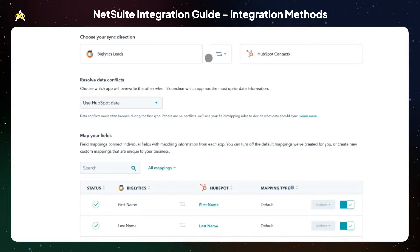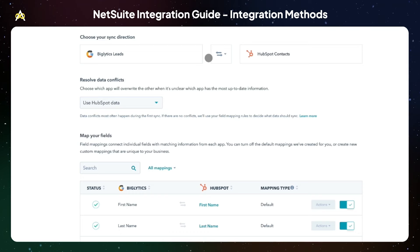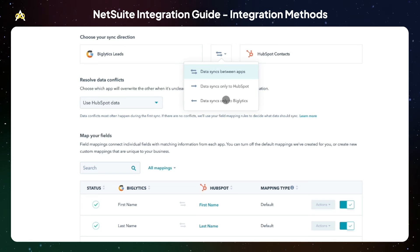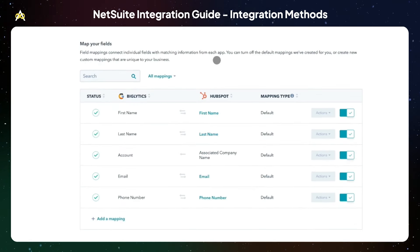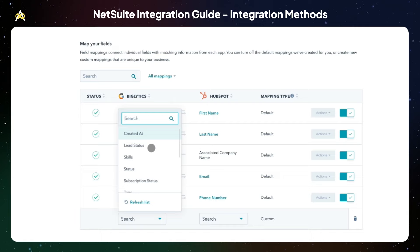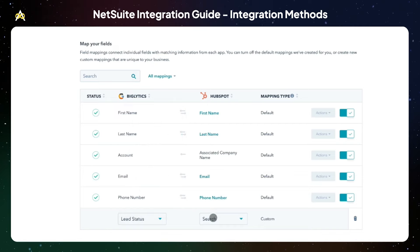When it comes to integrating NetSuite with HubSpot, you've got a few main options for how you set that up. The easiest way is with HubSpot's native data sync integration. You can choose one-directional or bi-directional sync, and you can map your data between the two platforms. You will need Operations Hub Pro or above in order to map custom properties.